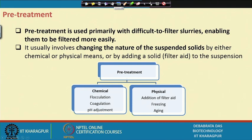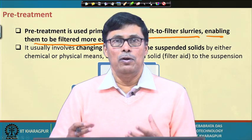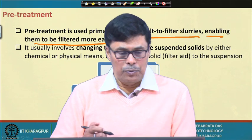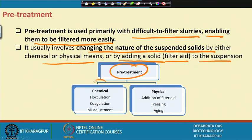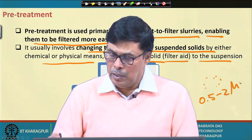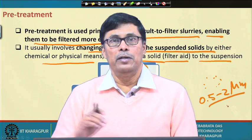Pre-treatment is used primarily when the slurry is difficult to filter, enabling it to be filtered more easily. We first separate out the larger cells so the smaller cells do not pose much problem to the separation process. This usually involves changing the nature of the suspended solid by either chemical or physical means, or by adding a solid filter aid to the suspension.